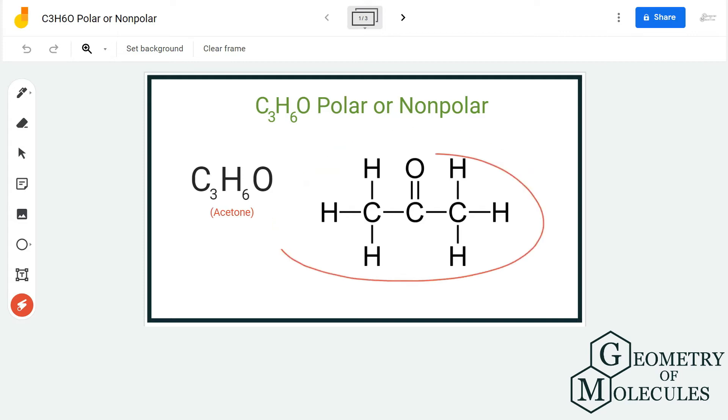If you look at its Lewis structure, it's quite simple because it is a symmetric molecule. It has one oxygen atom over here which is forming a double bond with carbon atom, and the rest we have hydrogen and carbon atoms over here. This is the Lewis structure.